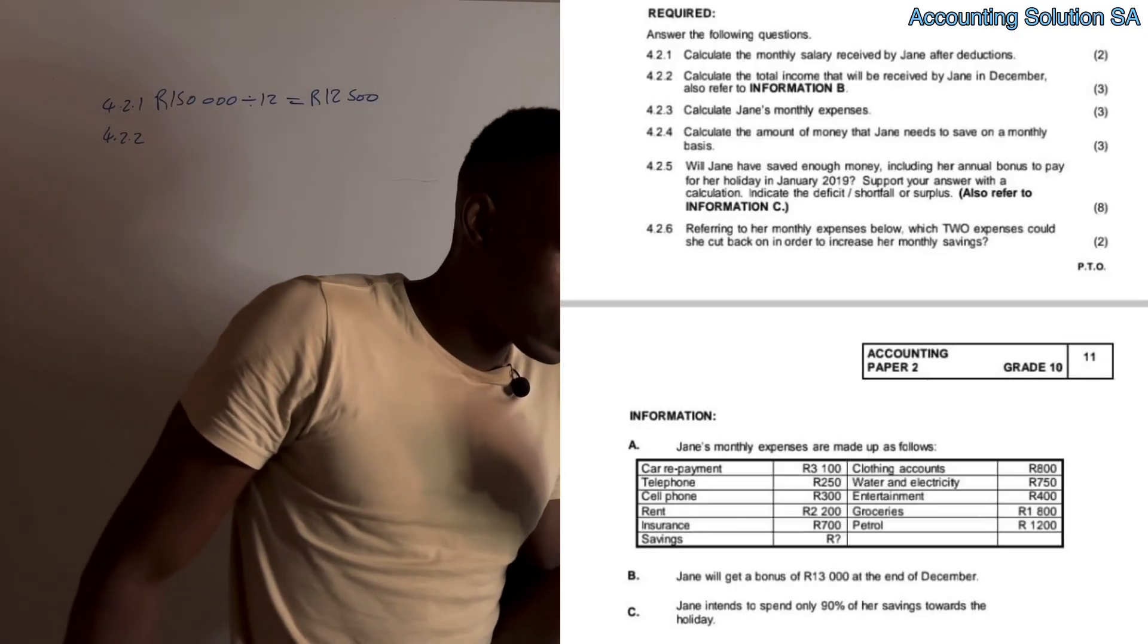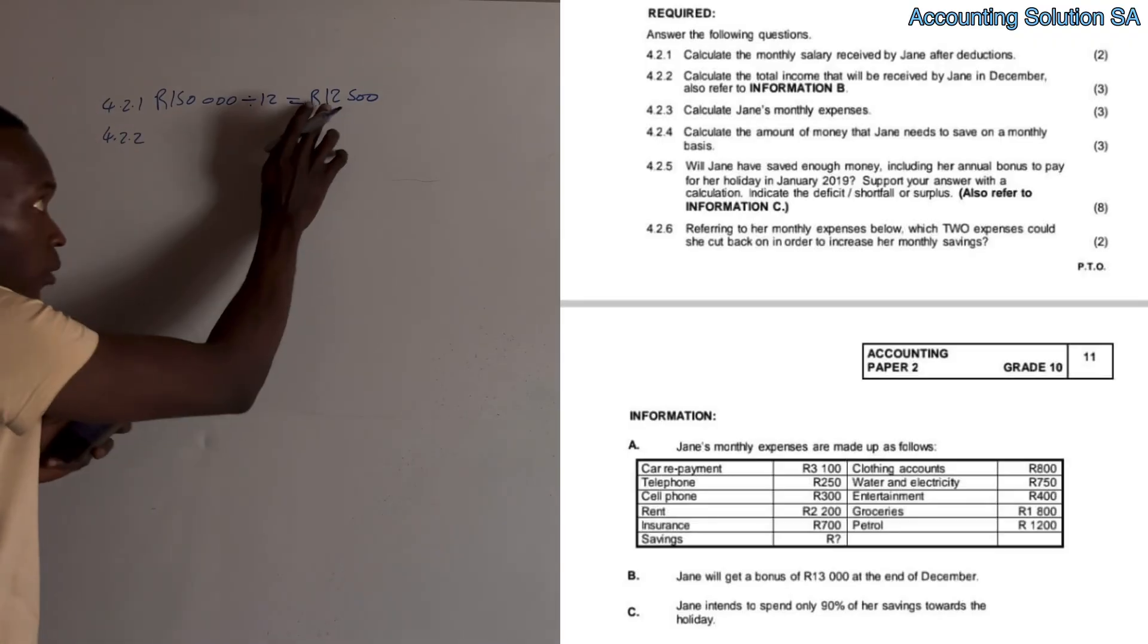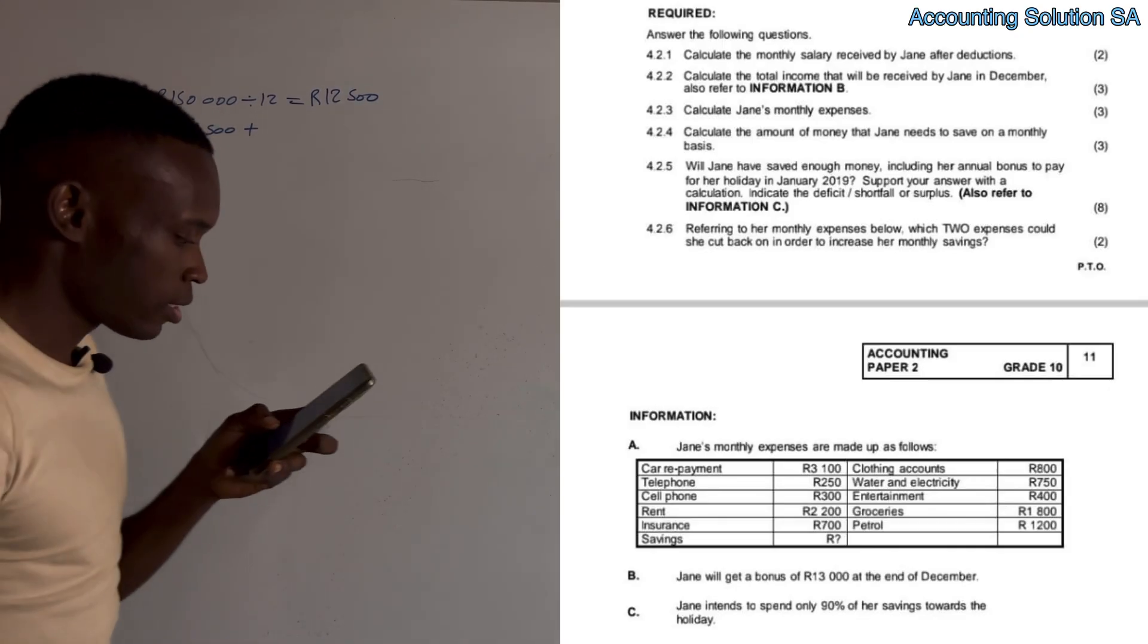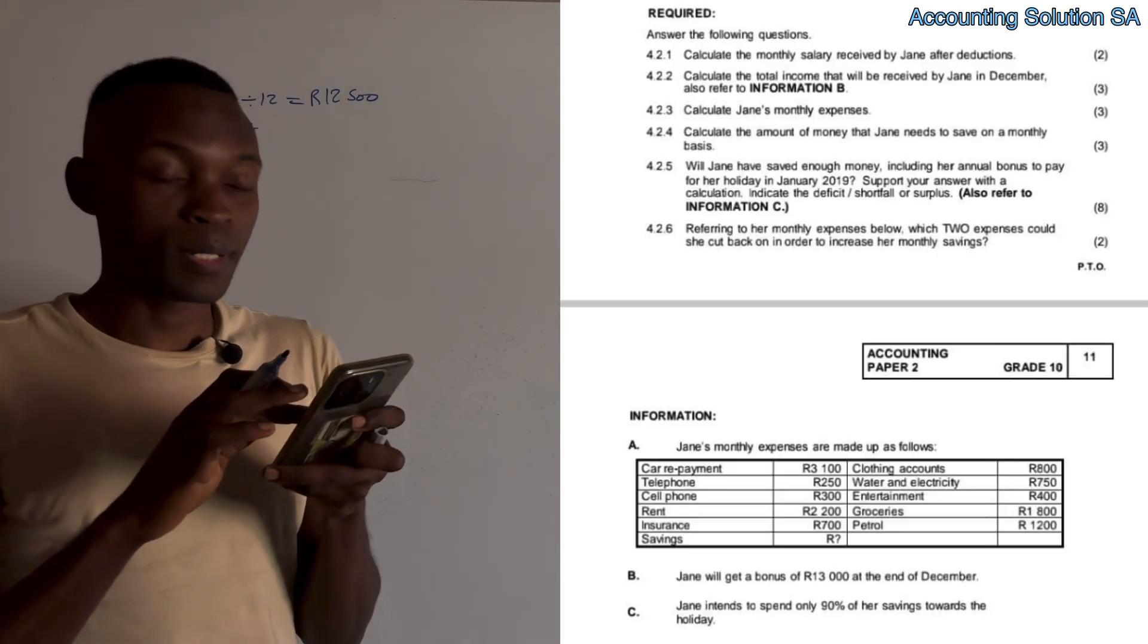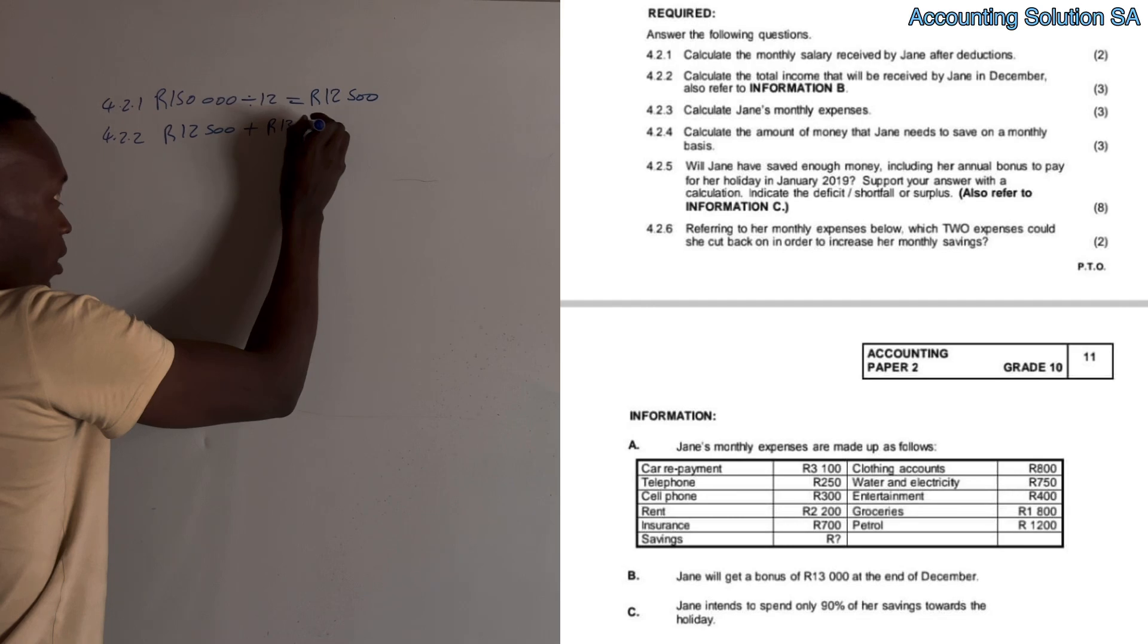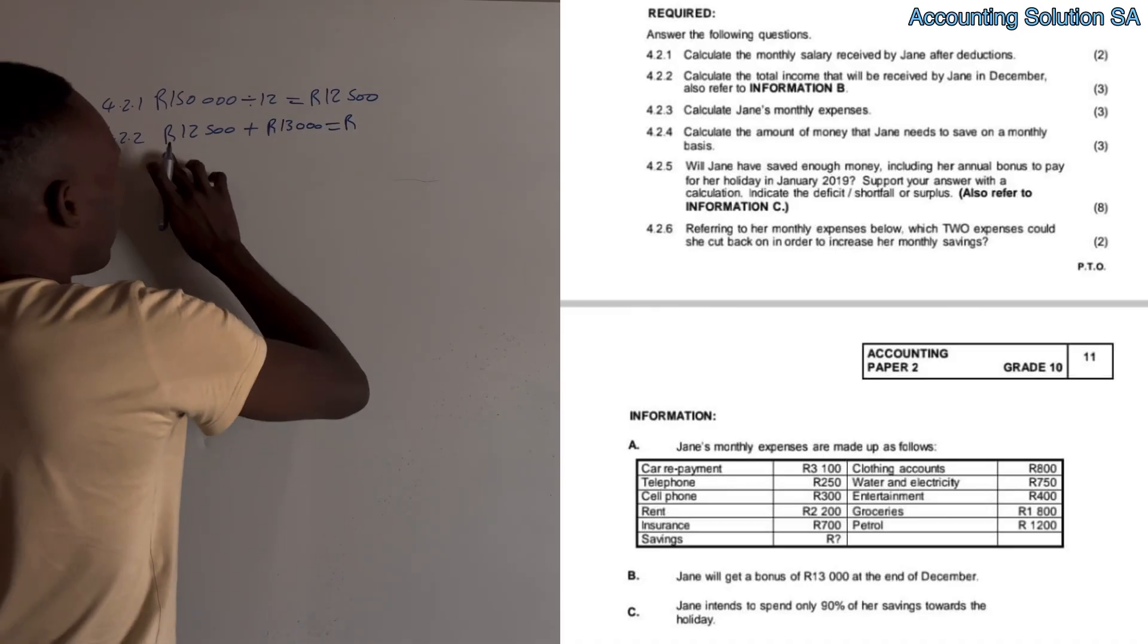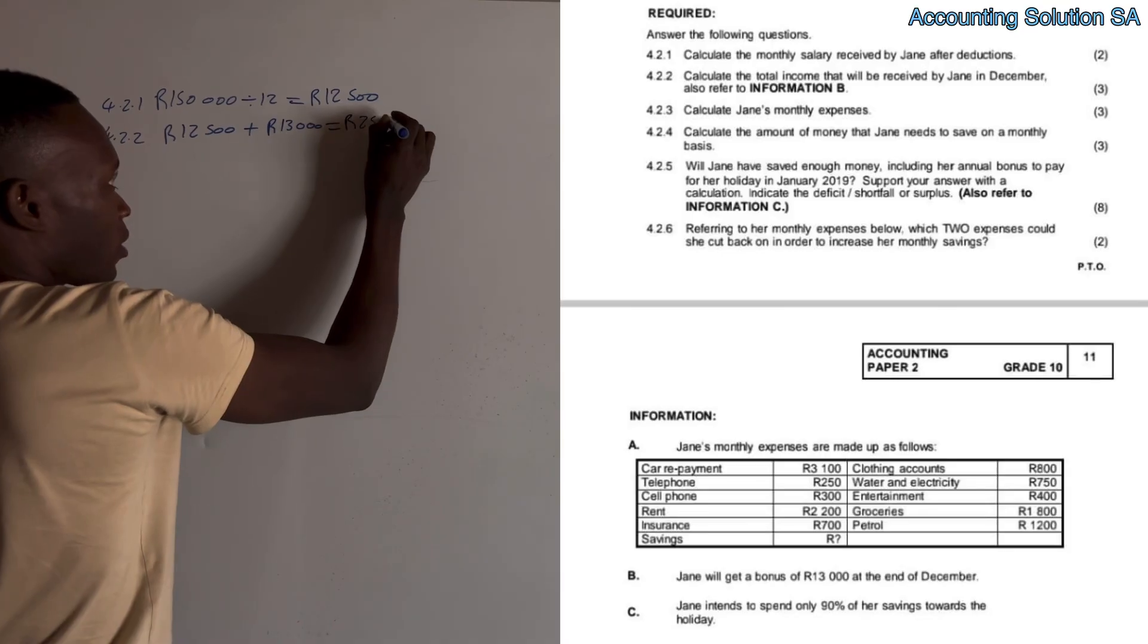Question 4.2.2: Calculate the total income received by Jane in December. Number one, we know that in December she has R12,500 of salary. Plus, we have to check information B which says Jane will get a bonus of R13,000 in December. R13,000 must be added, which means this month she's going to get R25,500.